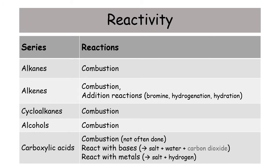When it comes to reactivity, you need to be able to identify what reactions each homologous series can do. Alkanes are only capable of combustion. Alkenes can do combustion but also a whole host of addition reactions — you can react an alkene with bromine (that is your test for saturation), you can do hydrogenation with hydrogen, hydration with water which produces alcohols, and you can also react it with things like hydrochloric acid. Cycloalkanes and alcohols at National 5 can only do combustion.